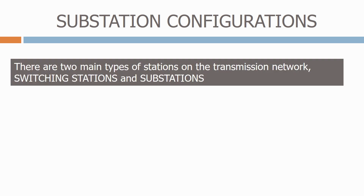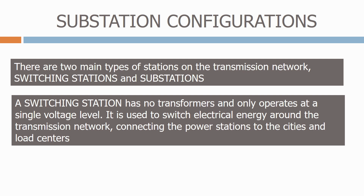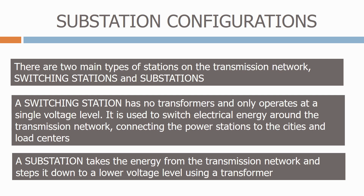There are two main types of stations on the transmission network: switching stations and substations. A switching station has no transformers and only operates at a single voltage level. It is used to switch electrical energy around the transmission network, connecting the power stations to the cities and load centres. A substation takes the energy from the transmission network and steps it down to a lower voltage level using a transformer.